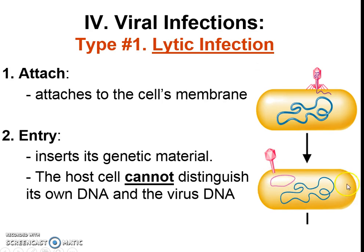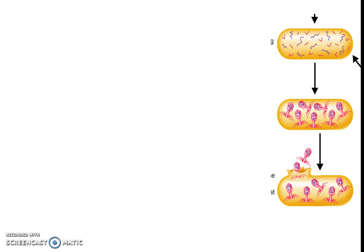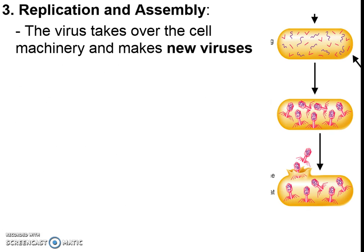We can see two circular sets of DNA — that's different from how our DNA is in our cells. This is probably a bacterial cell. Since the cell can't really distinguish between its own DNA and the DNA from the virus, the virus is able to take over the cell's DNA replication and protein synthesis machinery. It essentially tells the cell to make more virus proteins and more virus DNA, turning it into a factory to make more viruses.